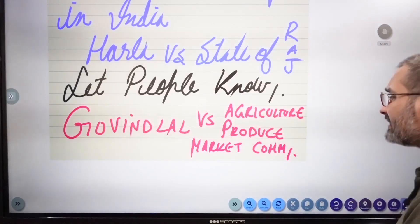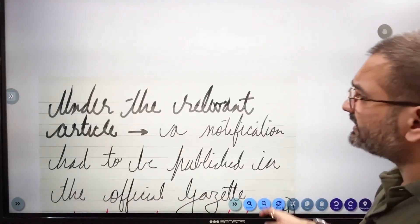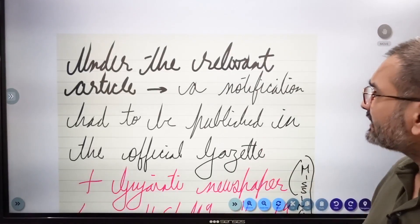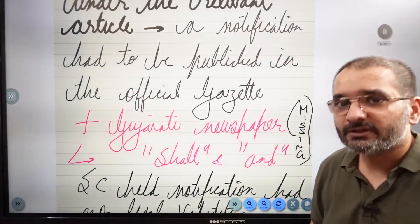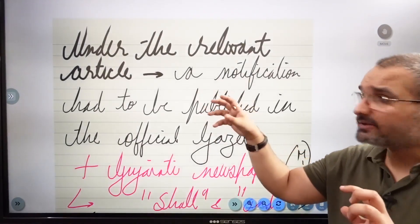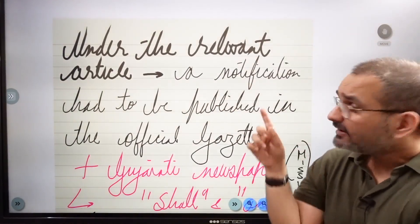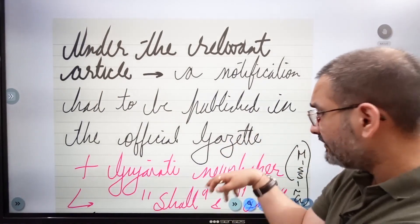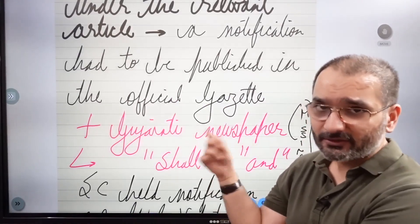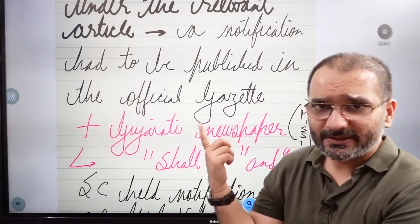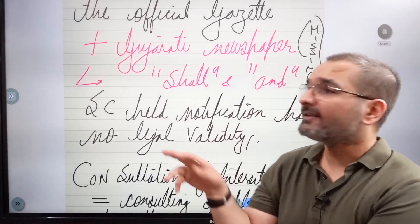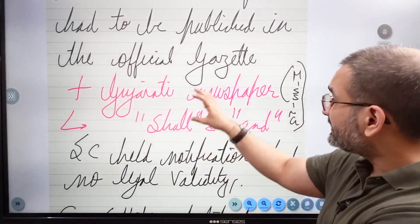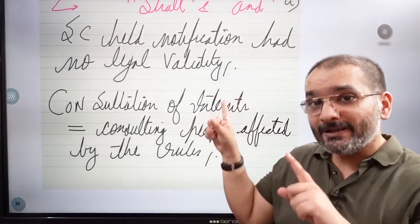In Govindlal versus Agriculture Produce Market Committee — a cardinal, very important case law — you cannot write an answer on delegated legislation without mentioning Govindlal. Under the relevant act, a notification had to be published in the official Gazette and in a local Gujarati newspaper. This was never done — the rule was never published in the local Gujarati newspapers. Govindlal challenged it, and the Supreme Court held that the notification had no legal validity because publication was a requirement to inform the people. Publication is important.